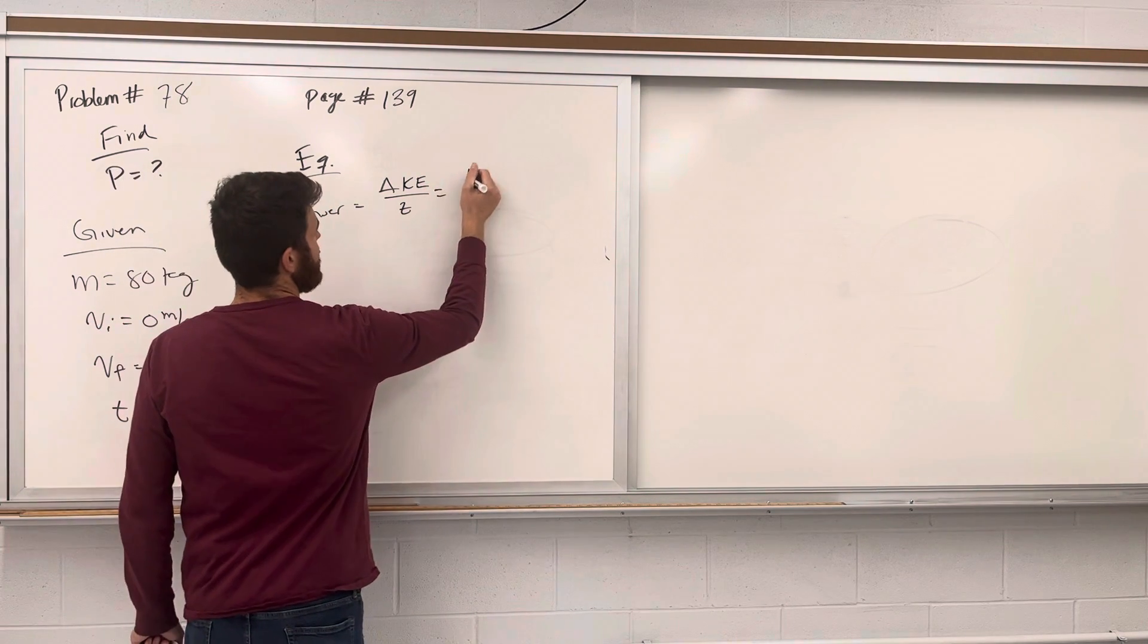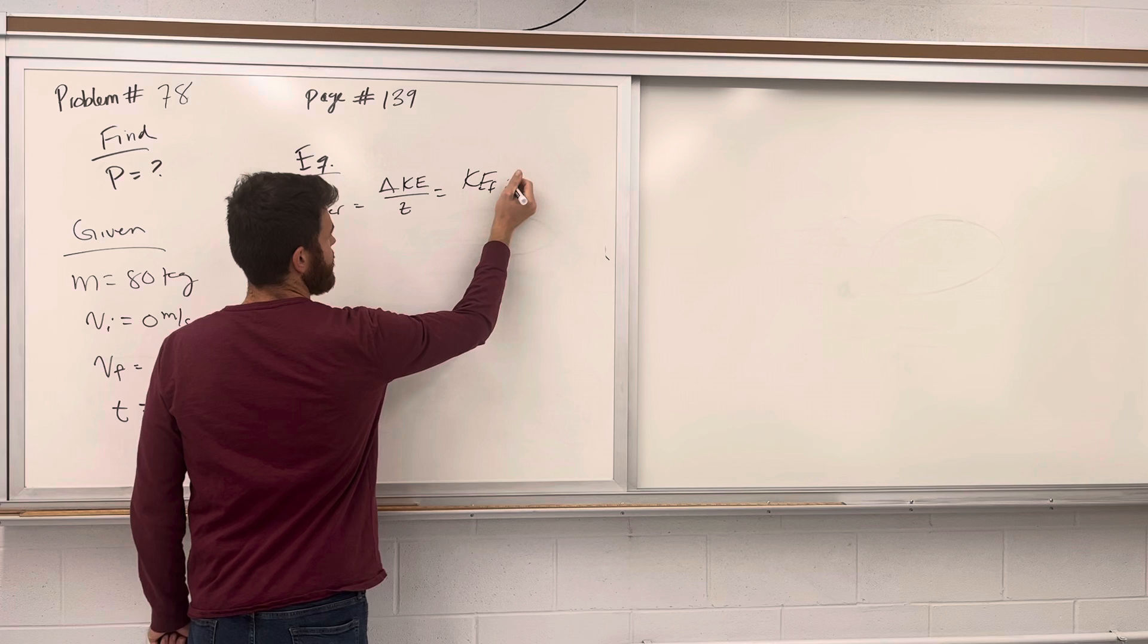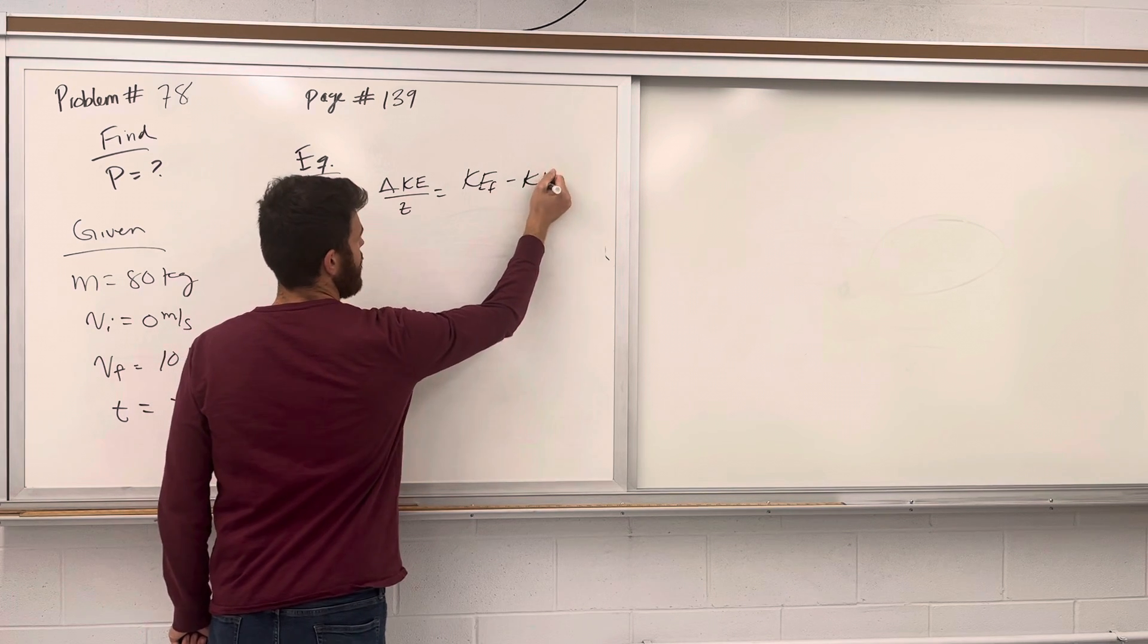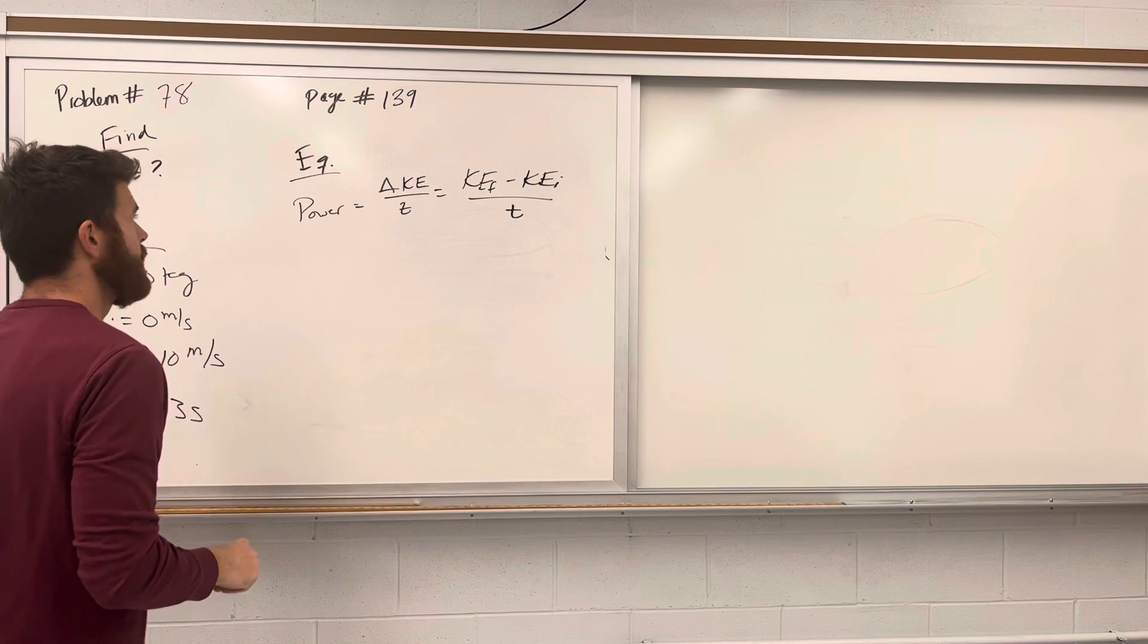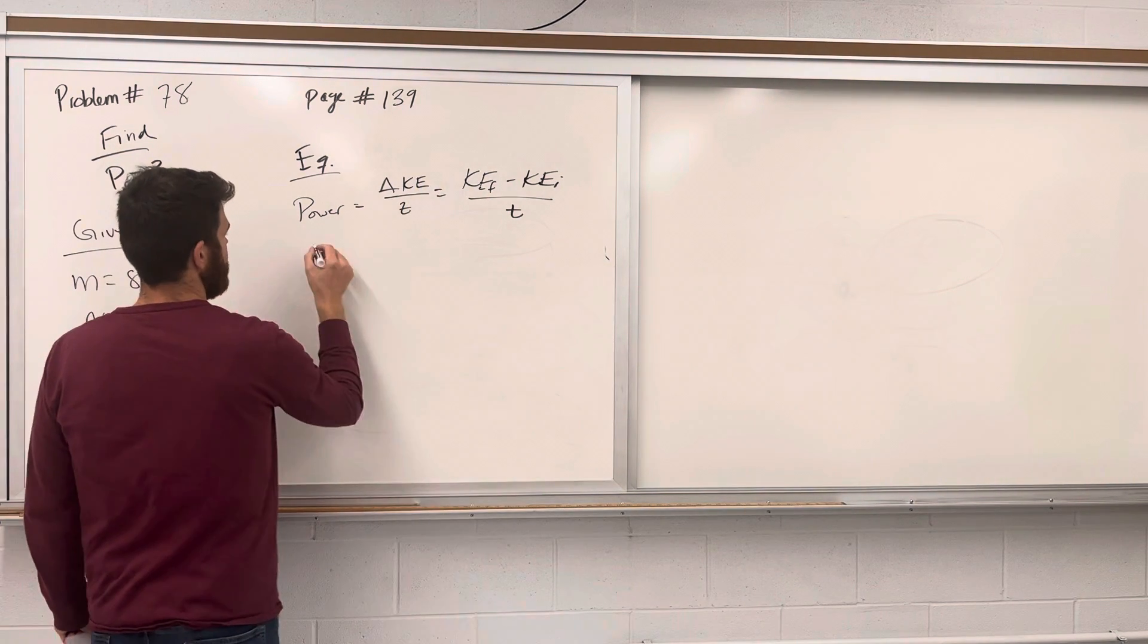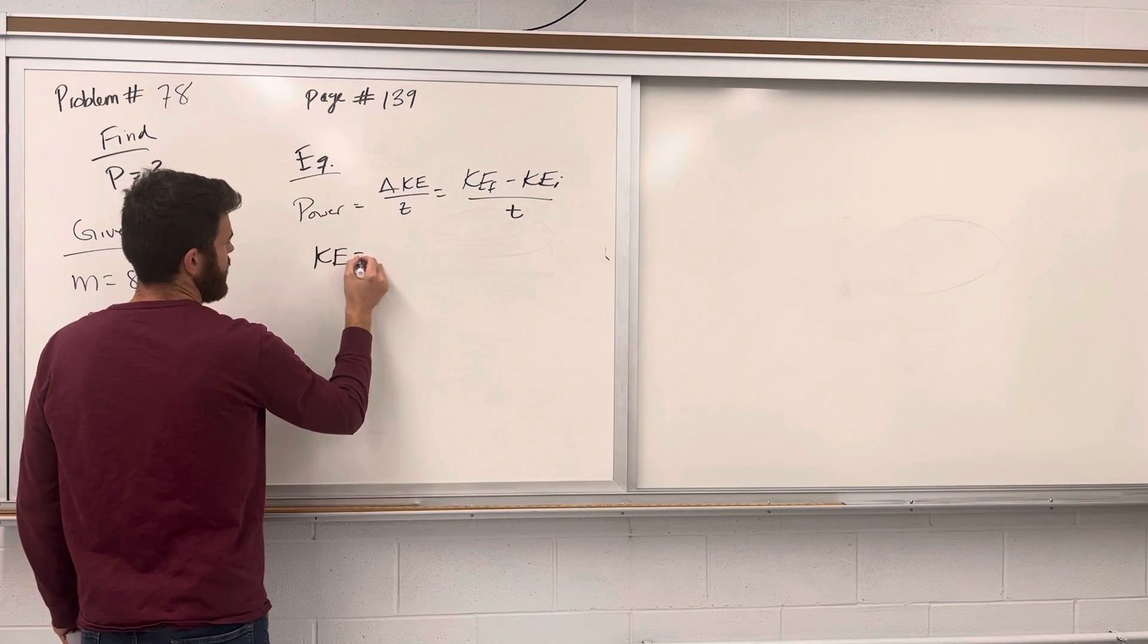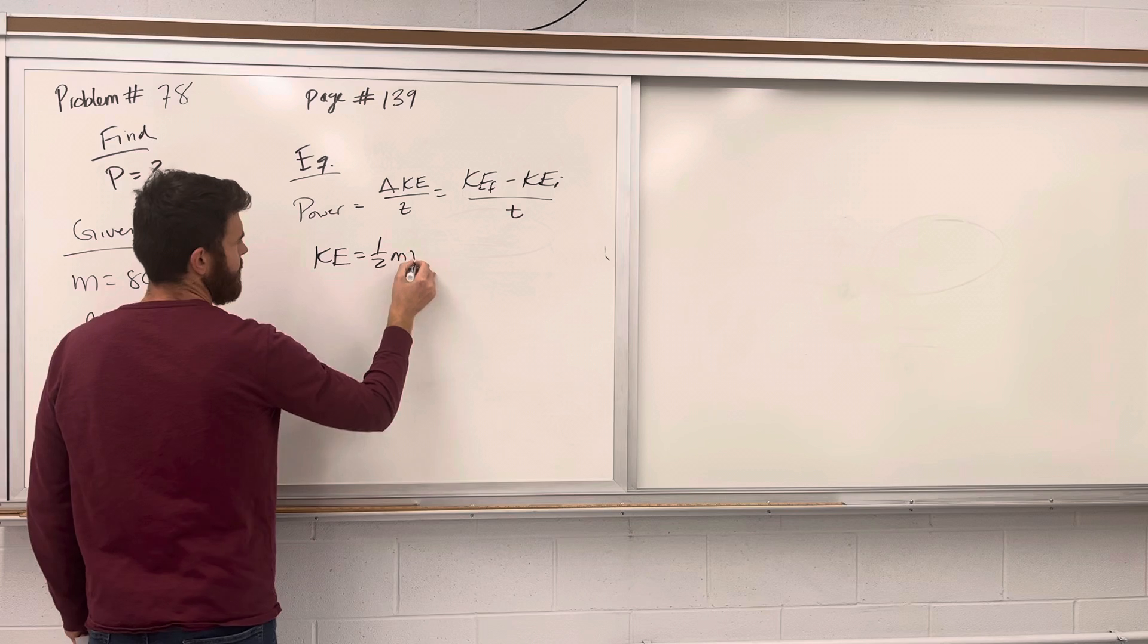So this is going to be our final kinetic energy minus our initial kinetic energy over time. And we need that the equation of kinetic energy is one half mv squared.